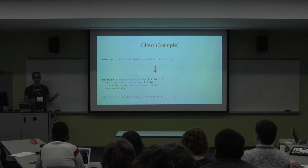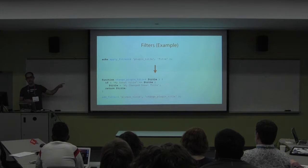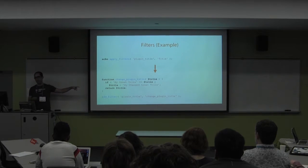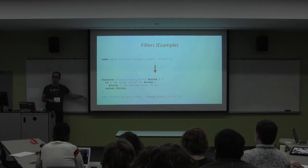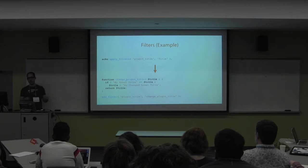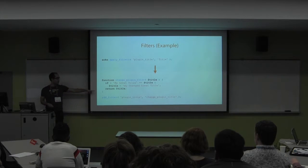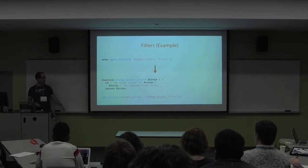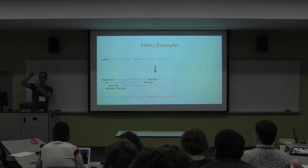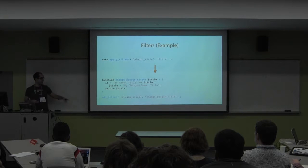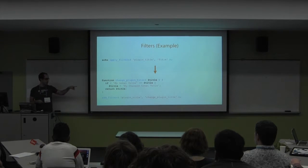You can also use a conditional - if the title equals 'migrate title', return something different; if not, return the same thing. You can check the post ID to only change it for a specific post. Always remember: if you're not changing the value, you must still return the original. Otherwise at the end of the chain you'll have nothing - not the right title. Always return the value of something, whether changed or original.